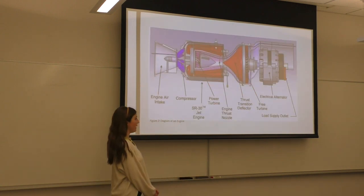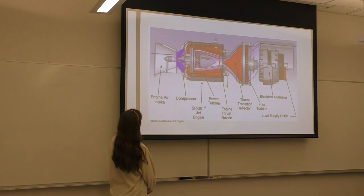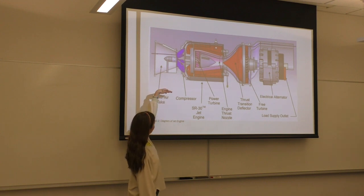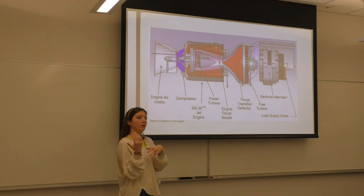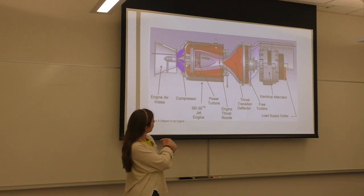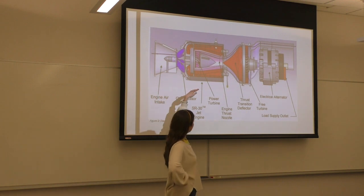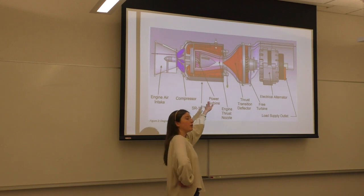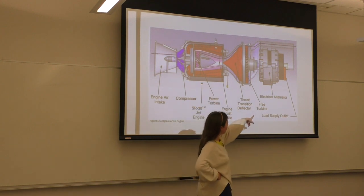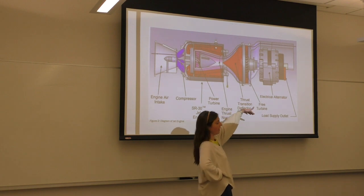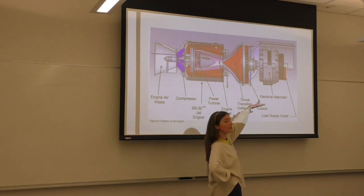So this is the schematic. We've seen this three times already. But I'm going to tell y'all again. So it goes in and then air enters the compressor and is mixed with fuel and then combusted. And that compression and combustion process creates the thrust, which does a few things. It will come through and then power the first turbine. And then that in turn, that power turbine, will drive the compressor. But then once the thrust exits the nozzle, it'll drive the second turbine. And that free turbine drives the electrical alternator, which drives the load supply.